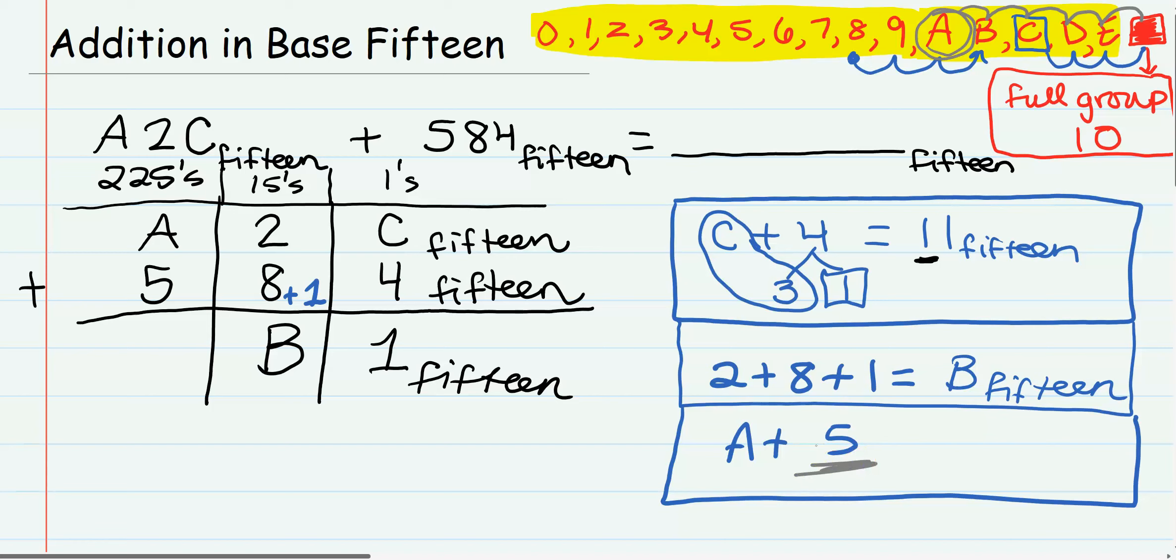So we have one full group of 15. How do we write one full group of 15? One full group of 15, no singles, so 1-0 is one full group of 15. So here we have A plus 5 is 10, so we write 0 in this third place value and 1 in the fourth place value.